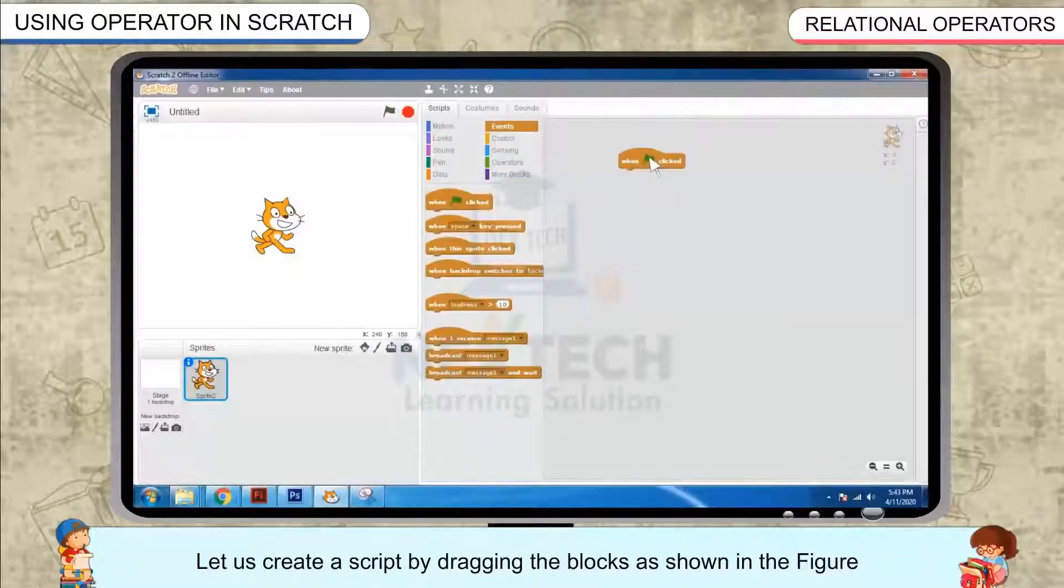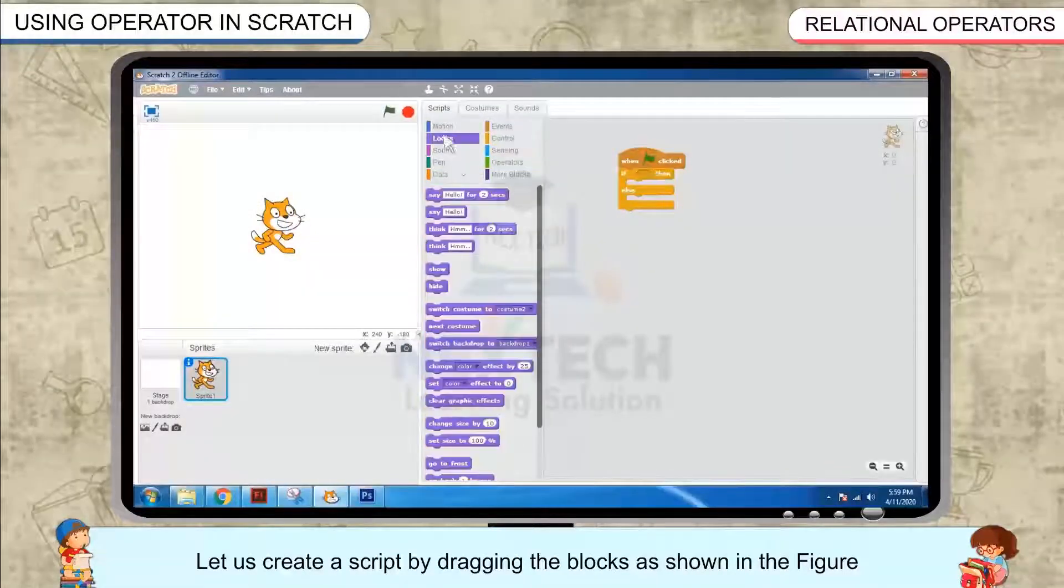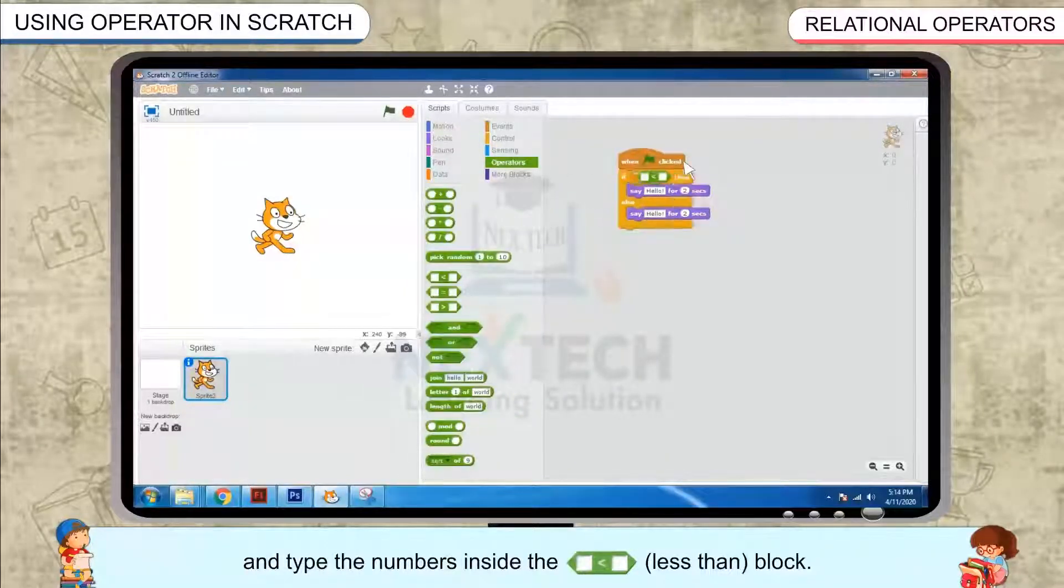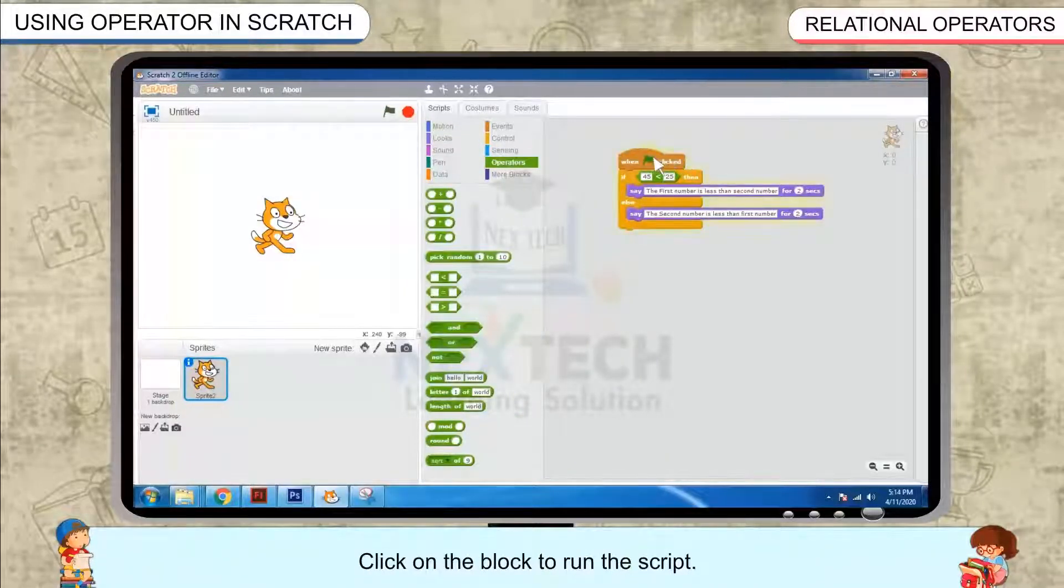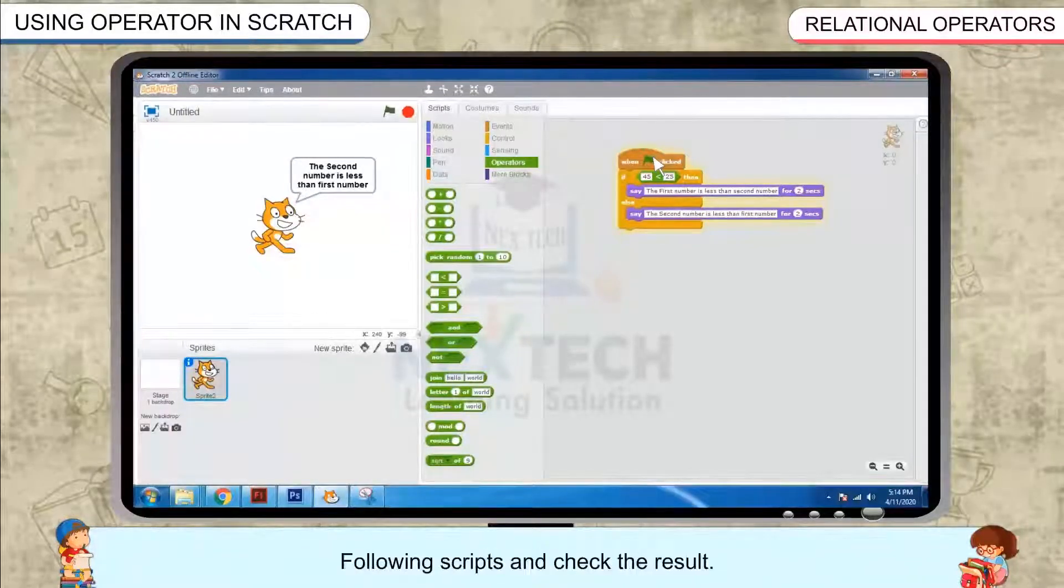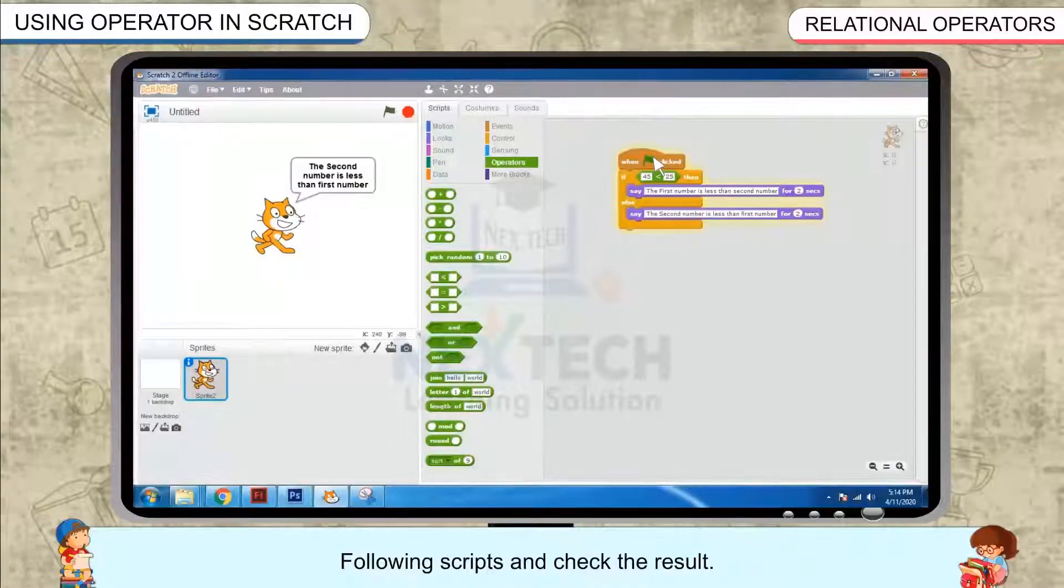Let us create a script by dragging the blocks as shown in the figure and type the numbers inside the less than block. Click on the block to run the script. Likewise, the equal to block, following scripts and check the results.